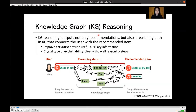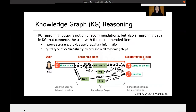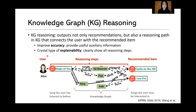Knowledge Graph reasoning outputs not only recommendations but also a reasoning path in the Knowledge Graph that connects the user with the recommended item. It not only improves accuracy by leveraging more useful information, but also provides a clear type of explainability by showing all the reasoning steps. For example, the reasoning path here shows that a song is recommended to a user because they listened to another song written and sung by Ed Sheeran, who is also the singer of the recommended song.